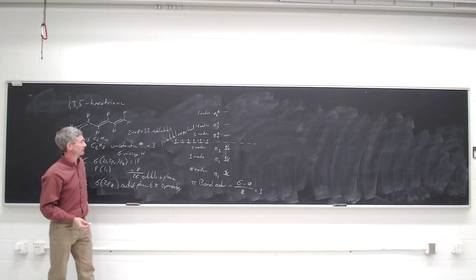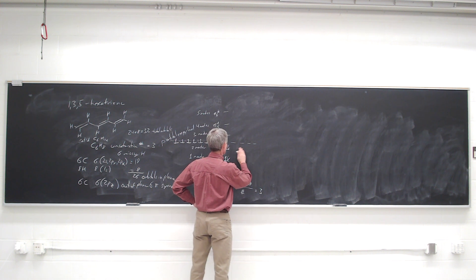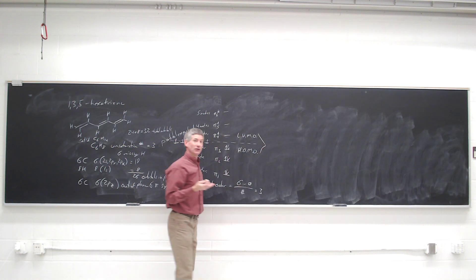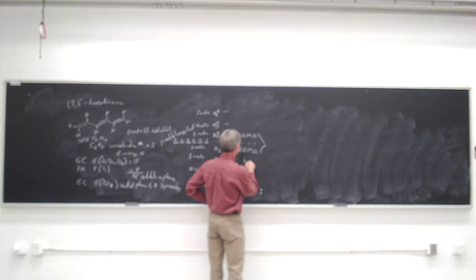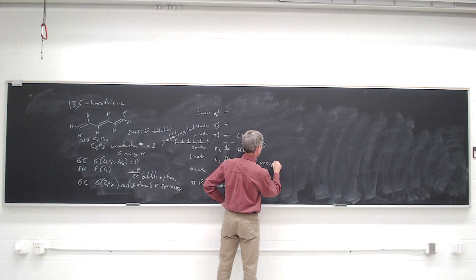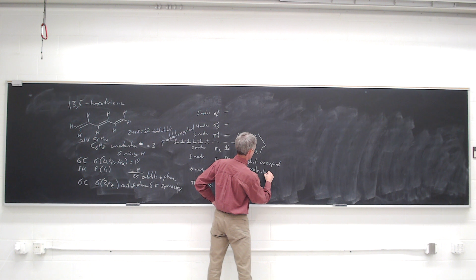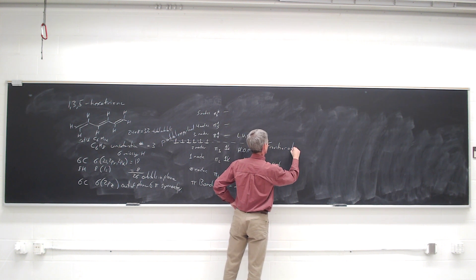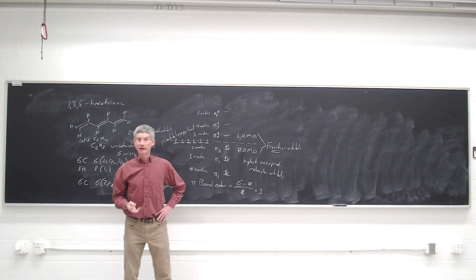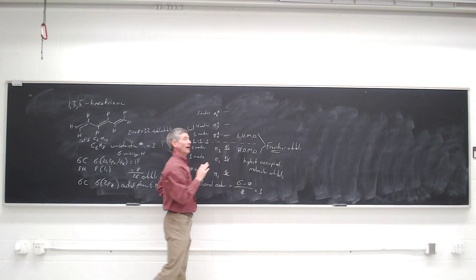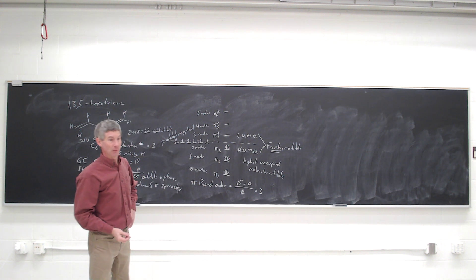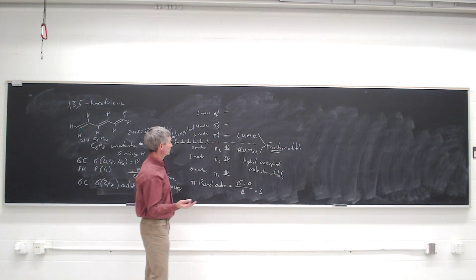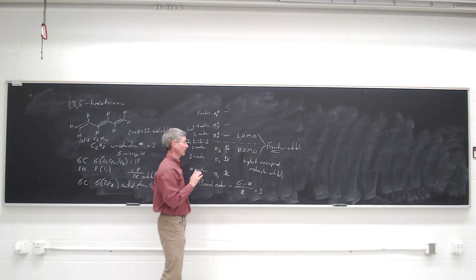We're ignoring the sigma system, the in-plane system, and the reason we don't need to worry about it is because it turns out that the highest occupied molecular orbital and lowest unoccupied molecular orbital, which represent the frontier, will be the reactive orbitals. We know that the frontier orbitals will be part of the pi system, not part of the in-plane sigma bonding system. So if you come to get electrons from this system, you're going to get them from the highest occupied pi orbital.